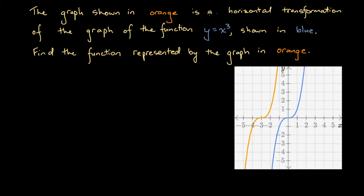The graph shown in orange is a horizontal transformation of the graph of the function y equals x to the power of 3, shown in blue. Find the function represented by the graph in orange. We have this graph here in blue — the graph of y equals x cubed — and another graph here in orange. We're told the orange graph is a horizontal transformation of the blue graph, meaning it's been shifted a number of units in a horizontal direction.